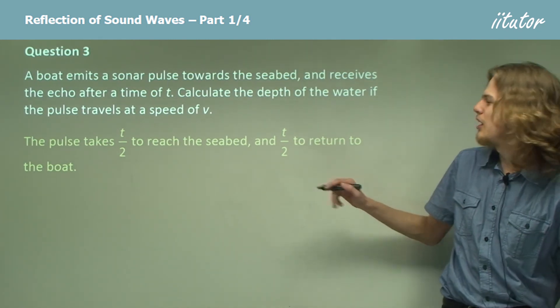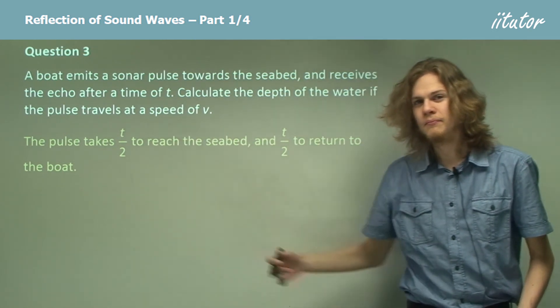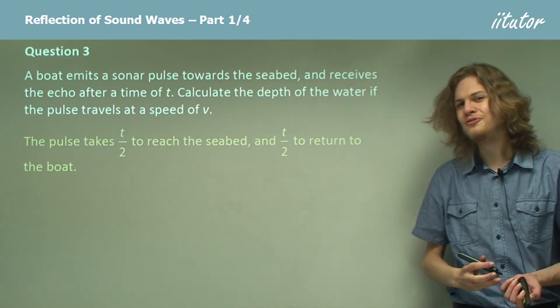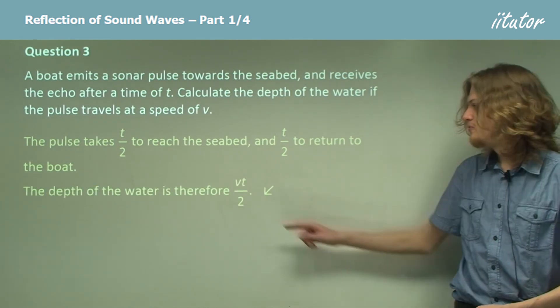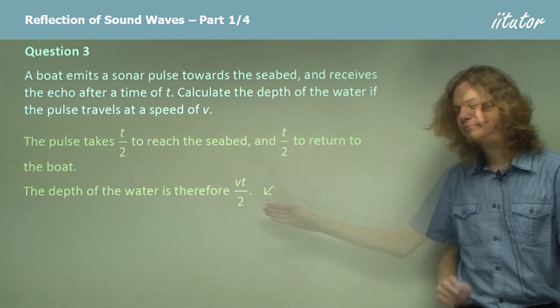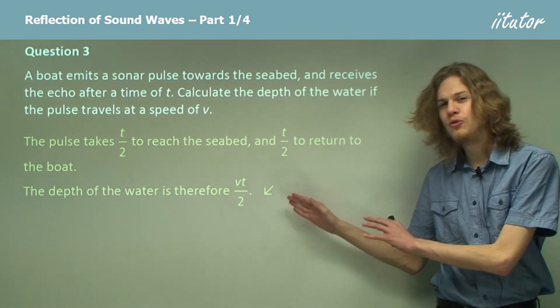Now what we need is distance equals velocity times time. We have the time, so the distance should be pretty easy to find. It'll just be v, the velocity, times t over two. So this will be the depth of the water.